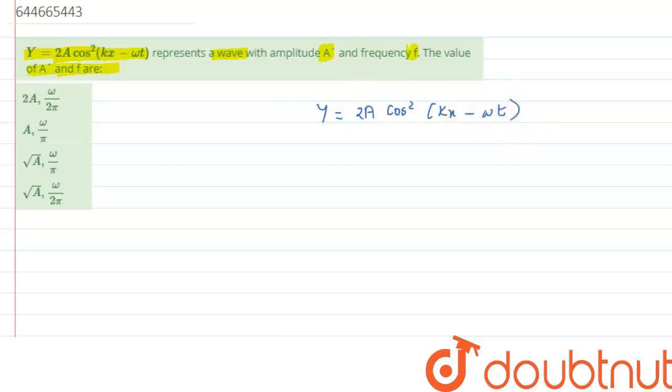So we have to resolve this further. Here we can write 2a, instead of cos square we can replace the value as